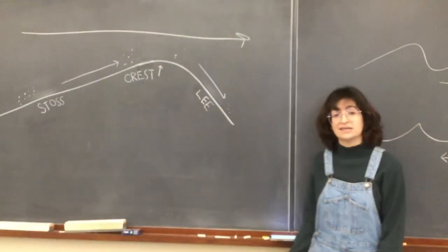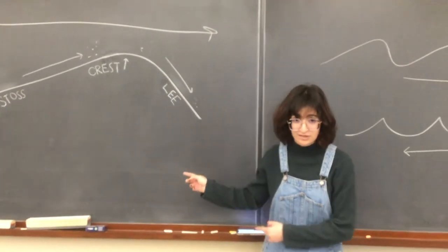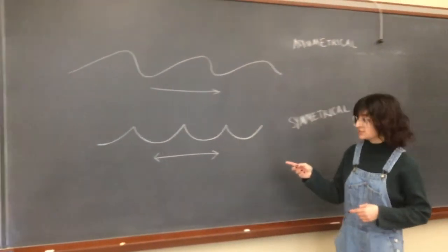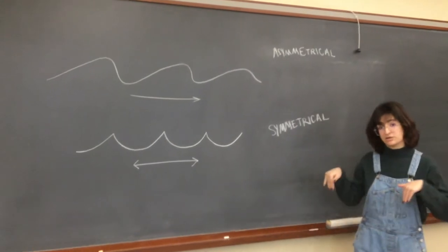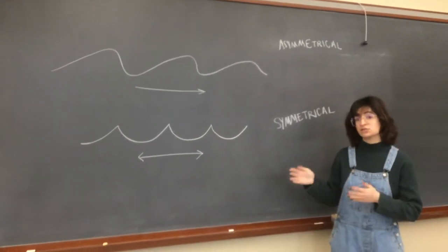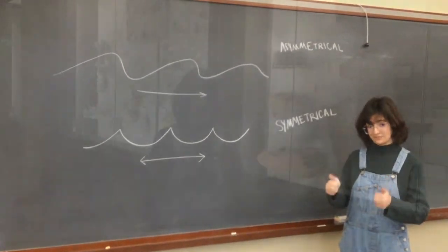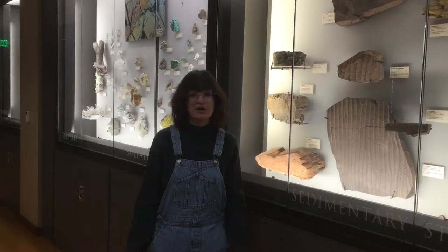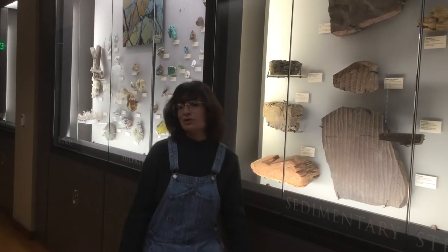These are called symmetrical ripples. Unlike asymmetrical ripples, which form in the presence of a unidirectional flow, symmetrical ripples form in the presence of waves. As the water goes back and forth, each side of the ripple becomes alternatively a site of deposition and erosion. So if there are back and forth waves, are we looking at a river environment? Probably not. We can find these ripples in a lake or an ocean.